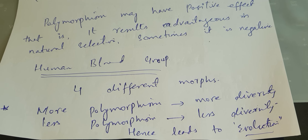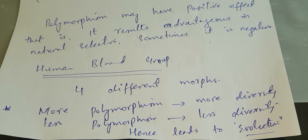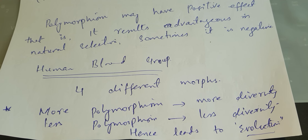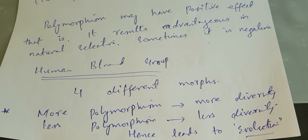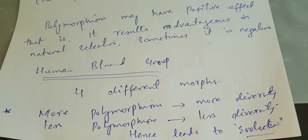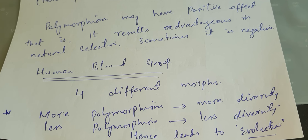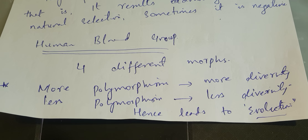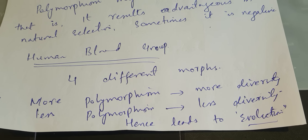We know that variation and different forms of diversity lead towards evolution. So, polymorphism can ultimately lead towards evolution.